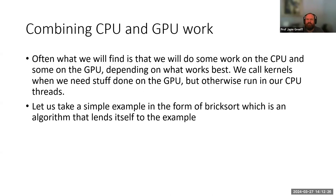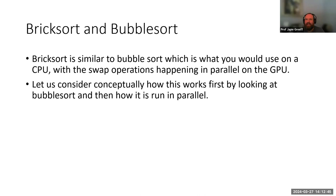We're going to work through a simple example of combining CPU and GPU work using a sorting algorithm called BrickSort, and show the differences between running on the CPU versus the GPU. BrickSort is very similar to BubbleSort — BubbleSort being the CPU version and BrickSort being the GPU-parallel version. Let's first consider how BubbleSort works conceptually, then show how BrickSort takes that and runs it in parallel.